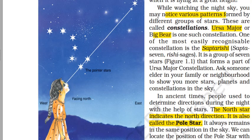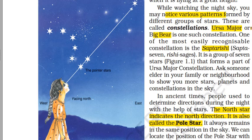When you continuously look at the sky, you might find some patterns in which most of the stars are found. These permanent patterns are known as constellations. Examples include Ursa Major, Big Bear, and the Saptarishi.